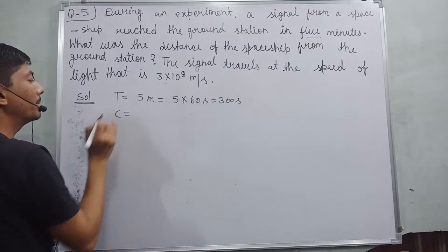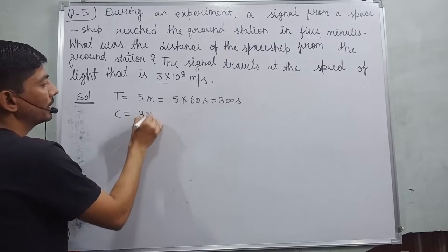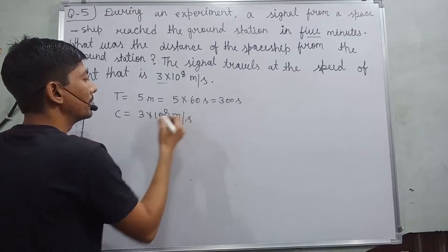The speed of light is represented by C, which is equal to 3 × 10⁸ meter per second.